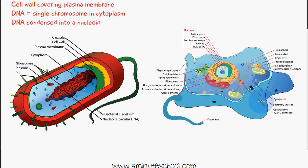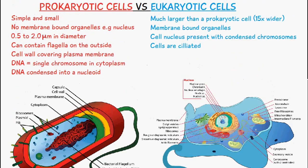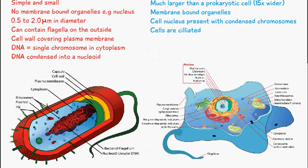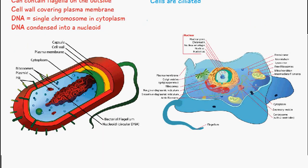This has been a brief introduction to what a cell is and the two types of cells — prokaryotic and eukaryotic — which make up different organisms. In the next video, I'm going to look at each organelle and explain what each organelle does inside the eukaryotic cell. If this video has been useful, write a comment below, and if you have any questions also write them below and we'll do our best to get back to you. Thanks for watching.